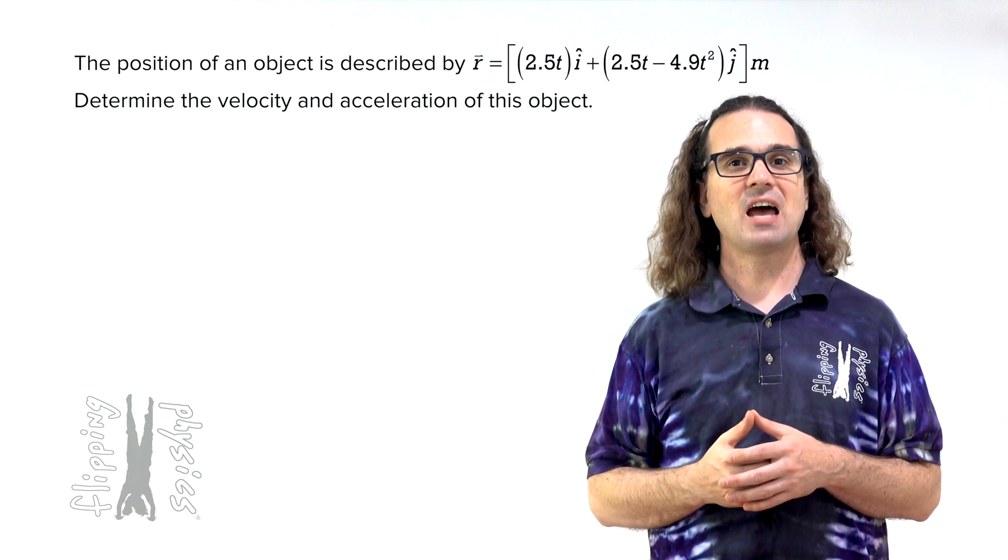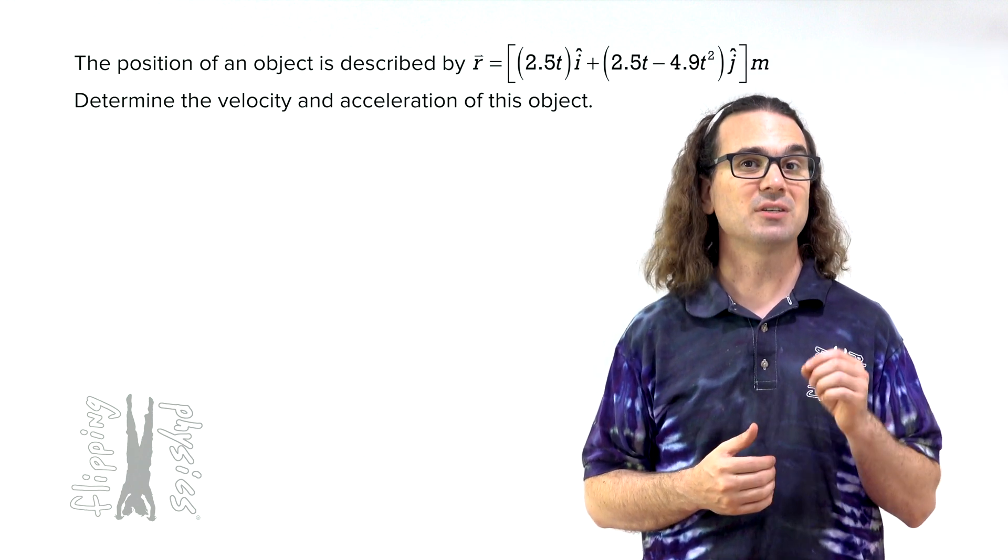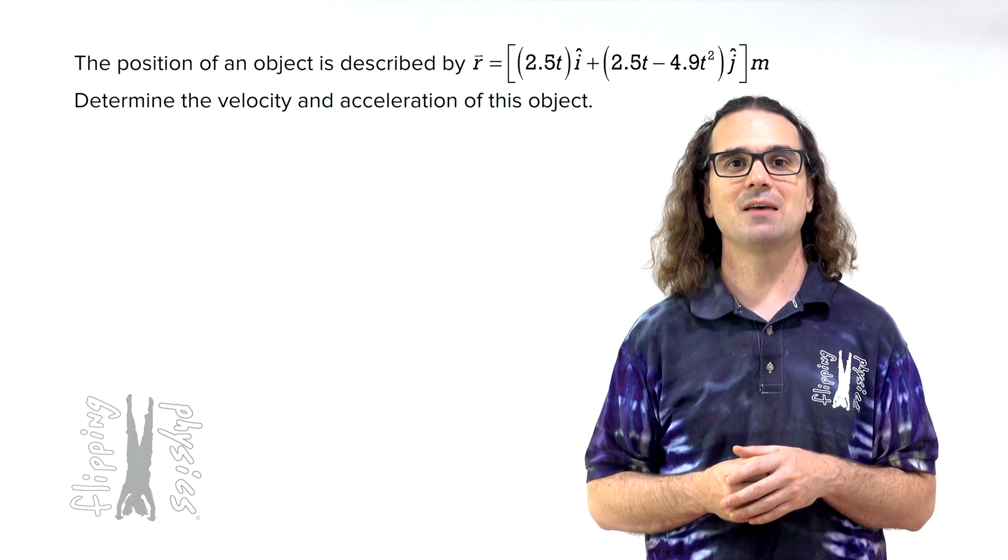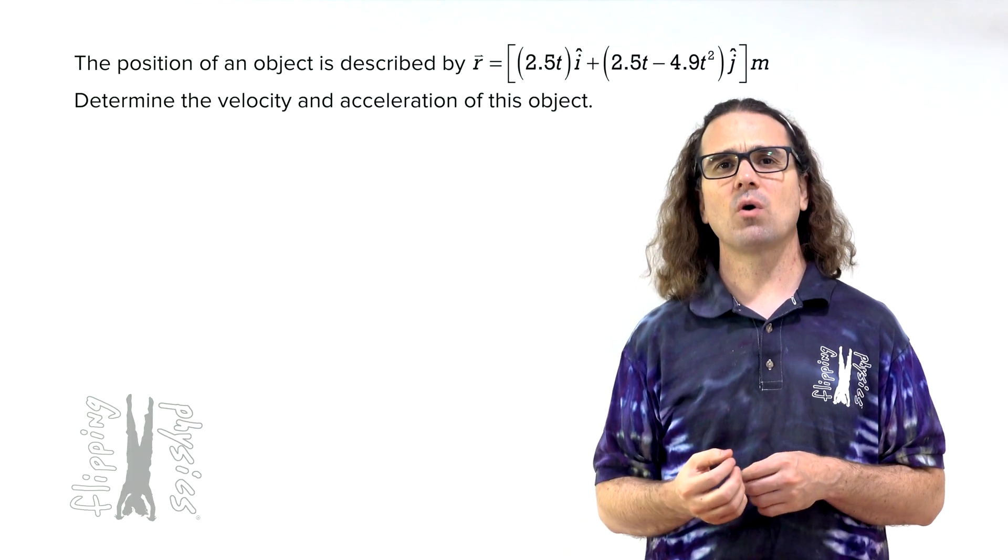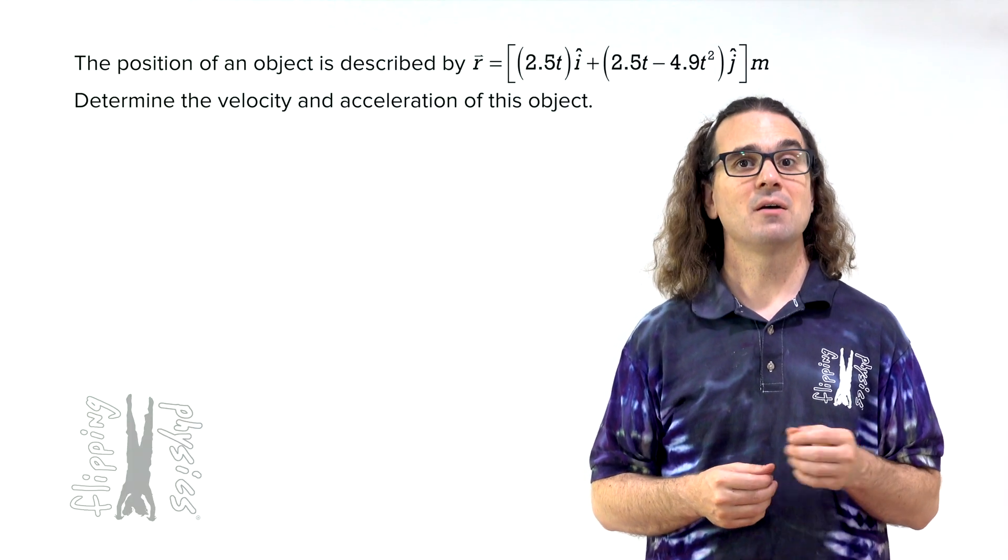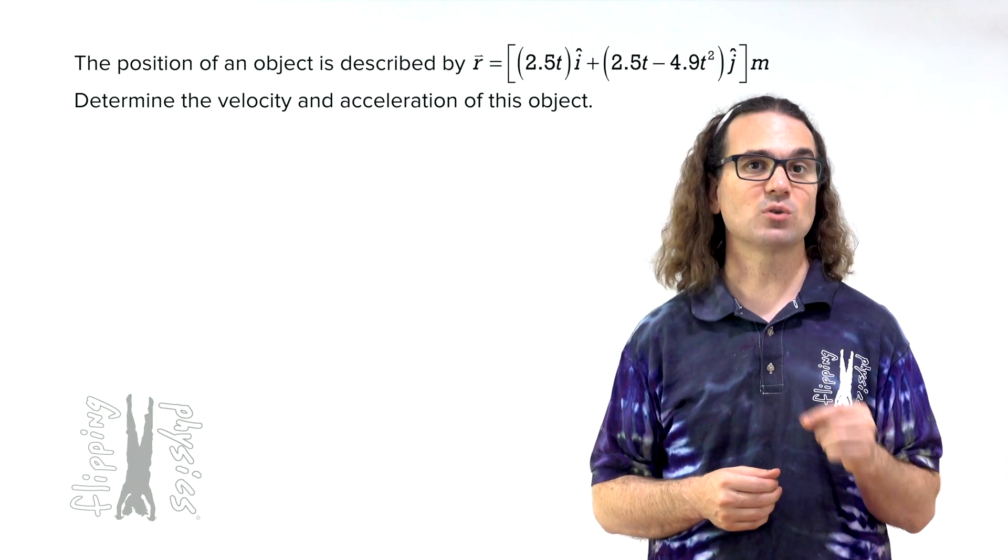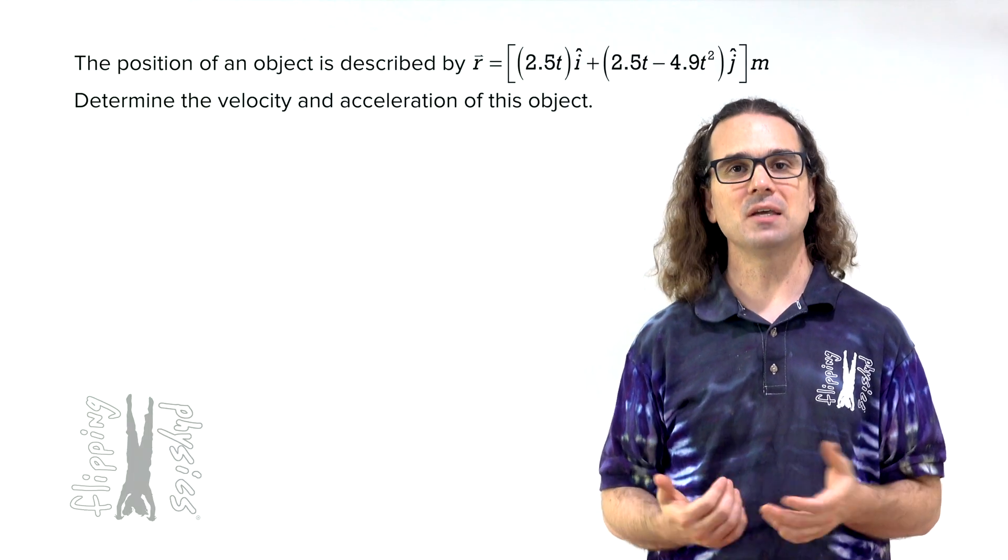Good morning. The position of an object is described by the equation position equals 2.5 times time in the i direction plus the quantity 2.5 times time minus 4.9 times time squared, all in the j direction, all in meters.